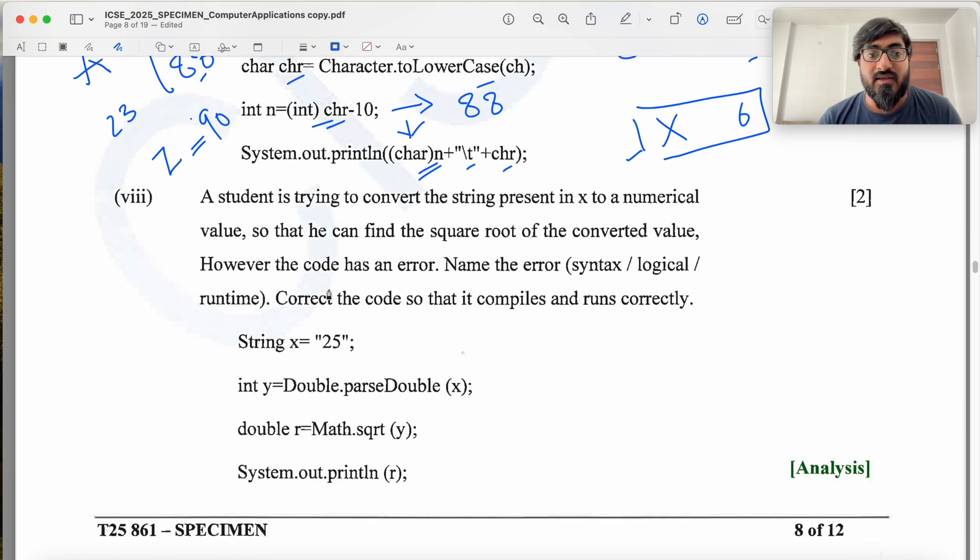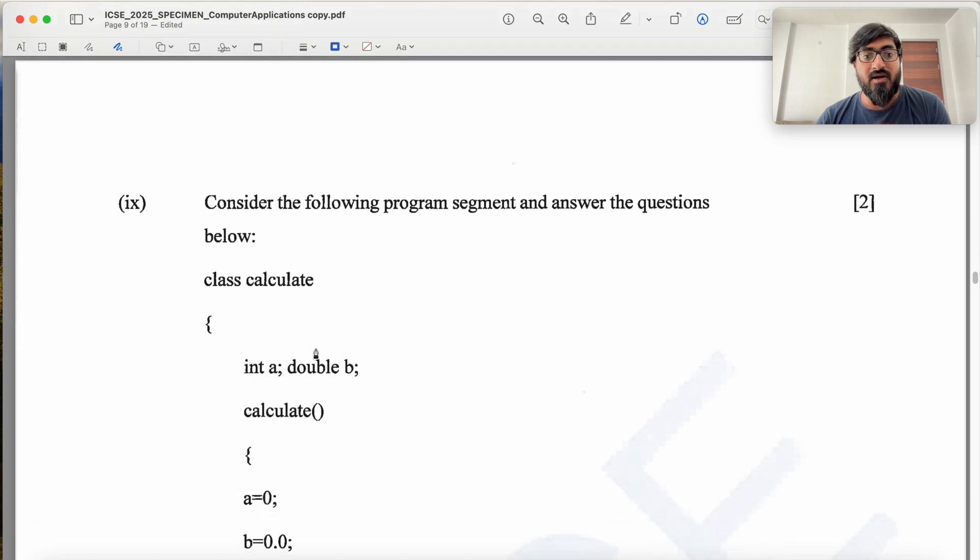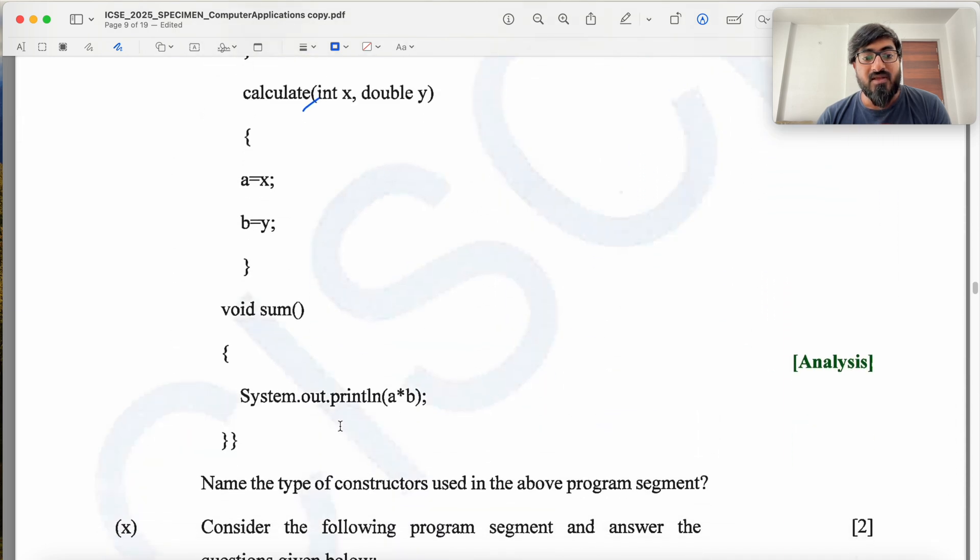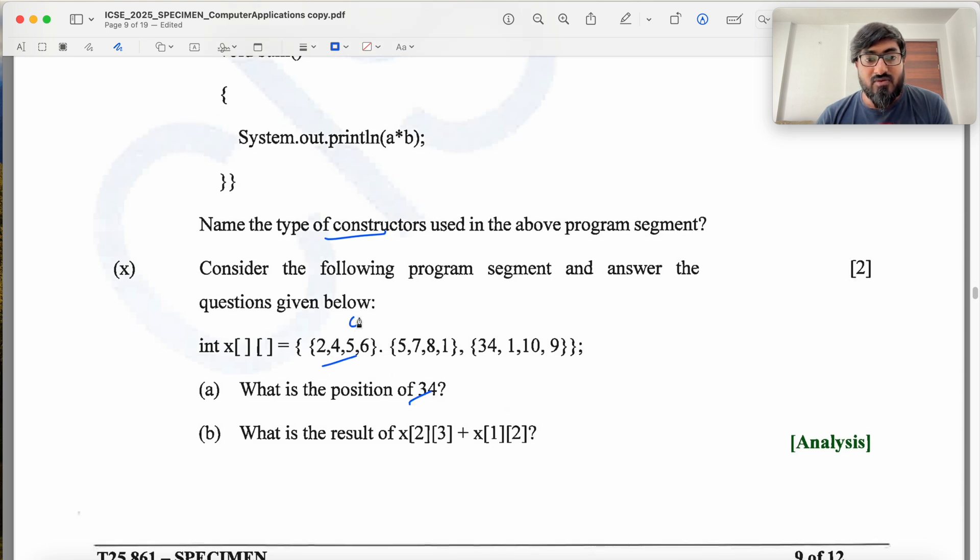The error is syntax error because the code will not compile. You are trying to convert a double to an int. So you basically replace this by double Y. Class calculate - default constructor where A and B are set to zero, parameterized constructor where A and B are set to X and Y. Type of constructors are parameterized and default. Then you have this array - what is the position of 34? This is row 0, row 1, row 2. 34 is column 0, so 2, 0. Then what is the value of X 2, 3 plus X 1, 2. This is 9 plus 70, which equals 79.